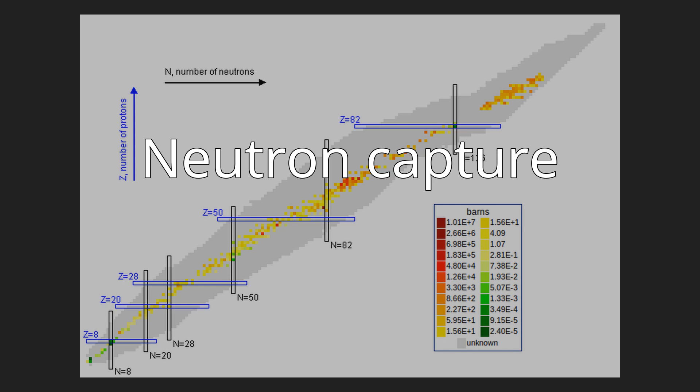Neutron capture on protons yields a line at 2.223 MeV predicted and commonly observed in solar flares.